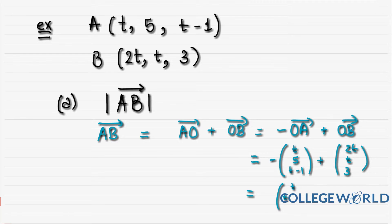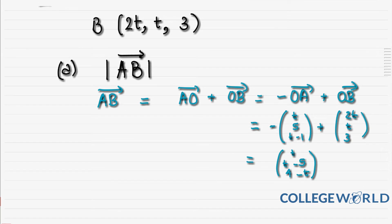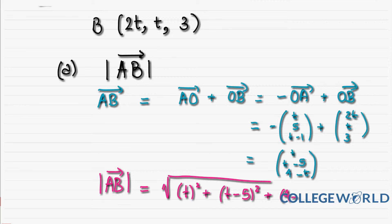The resultant is going to be (t, t-5, 4-t). That would be our AB vector. If we want to find the modulus, we find the square root of the first squared plus the second squared plus the third squared. If we expand this, we end up with √(3t² - 18t + 41), and that would be the modulus of AB.